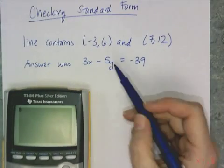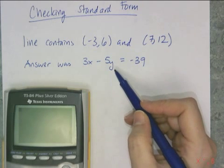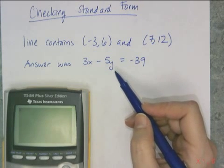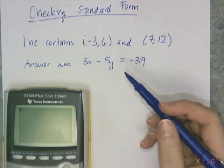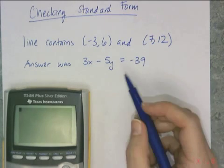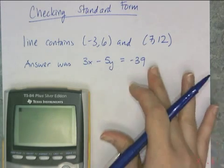And if you go ahead and convert this into slope-intercept format, you can make a mistake in your conversion and then it looks like your answer's wrong. So you don't want to do anything to this at all when you check your answer.